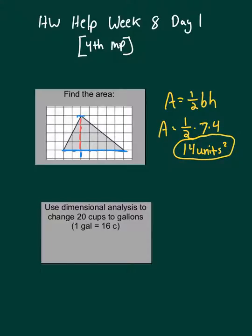Let's go to the bottom problem. This says use dimensional analysis to change 20 cups to gallons. So I'm going to start by writing 20 cups as a fraction, 20 over one.